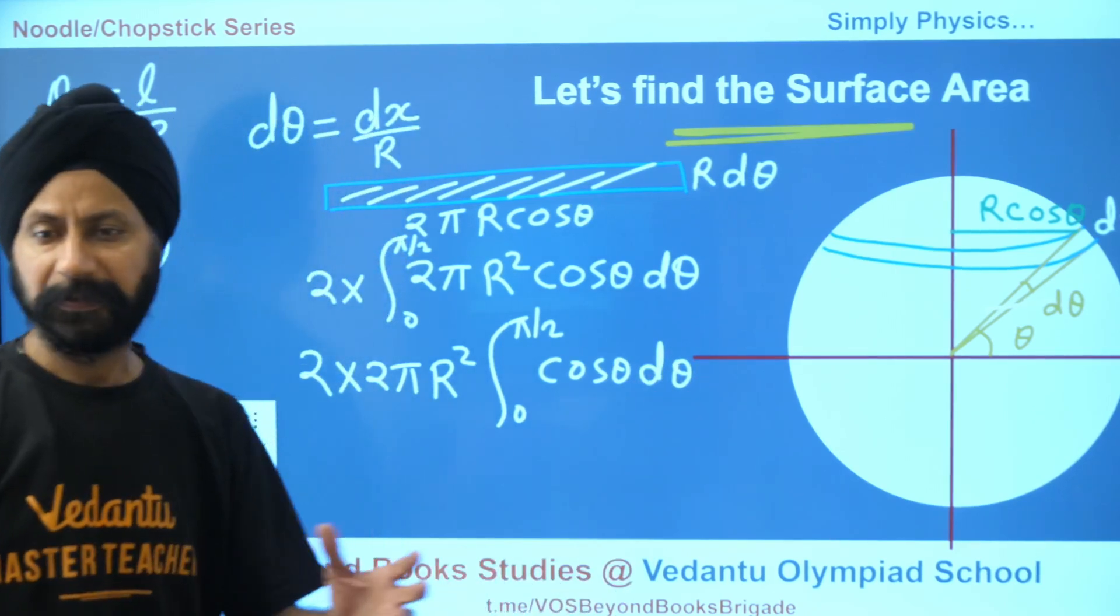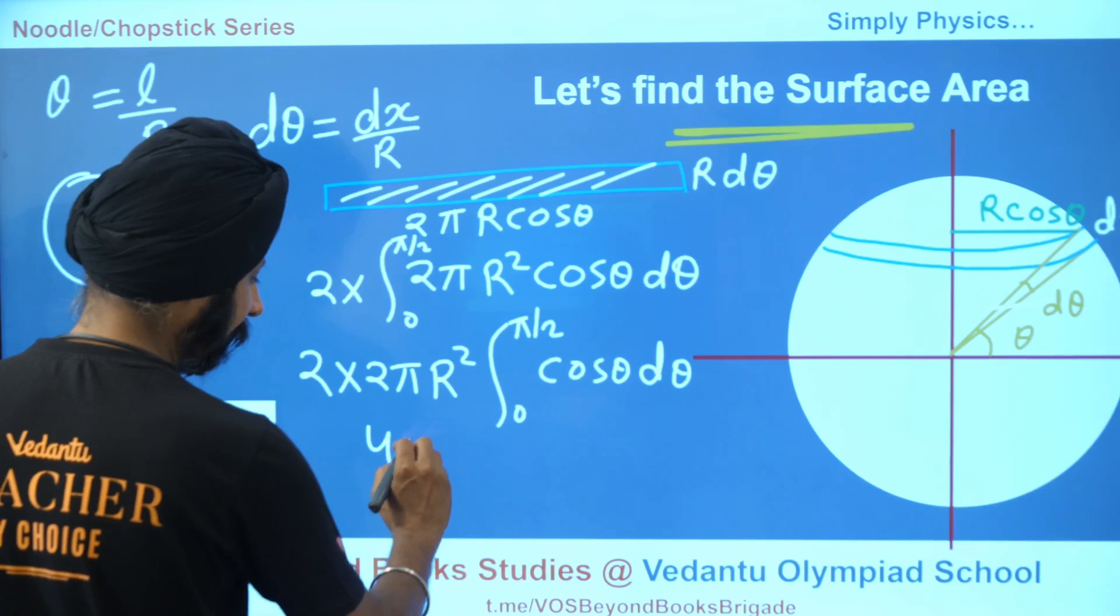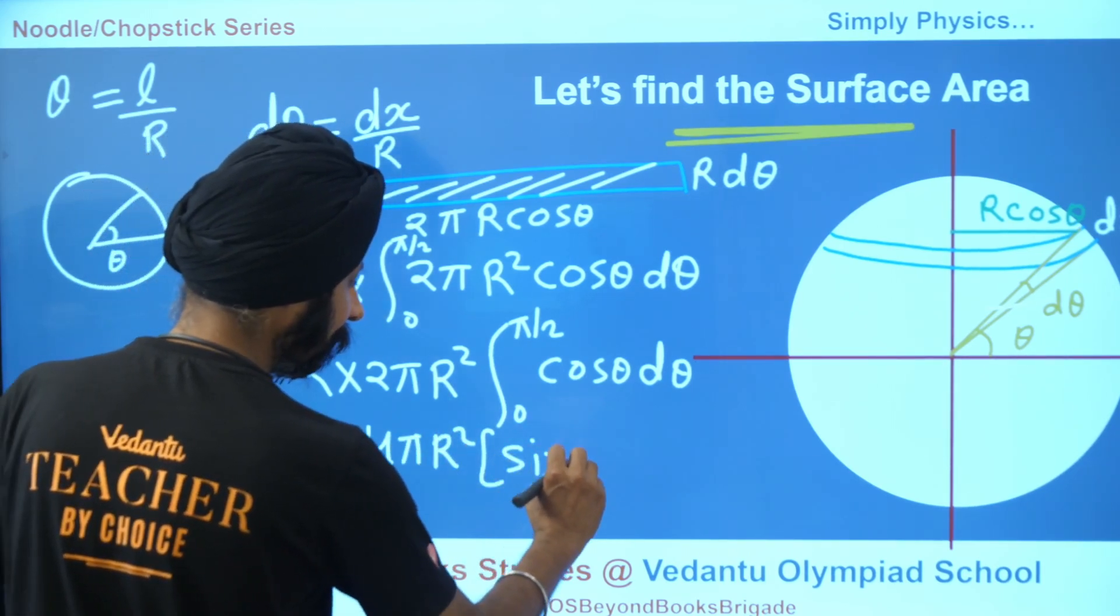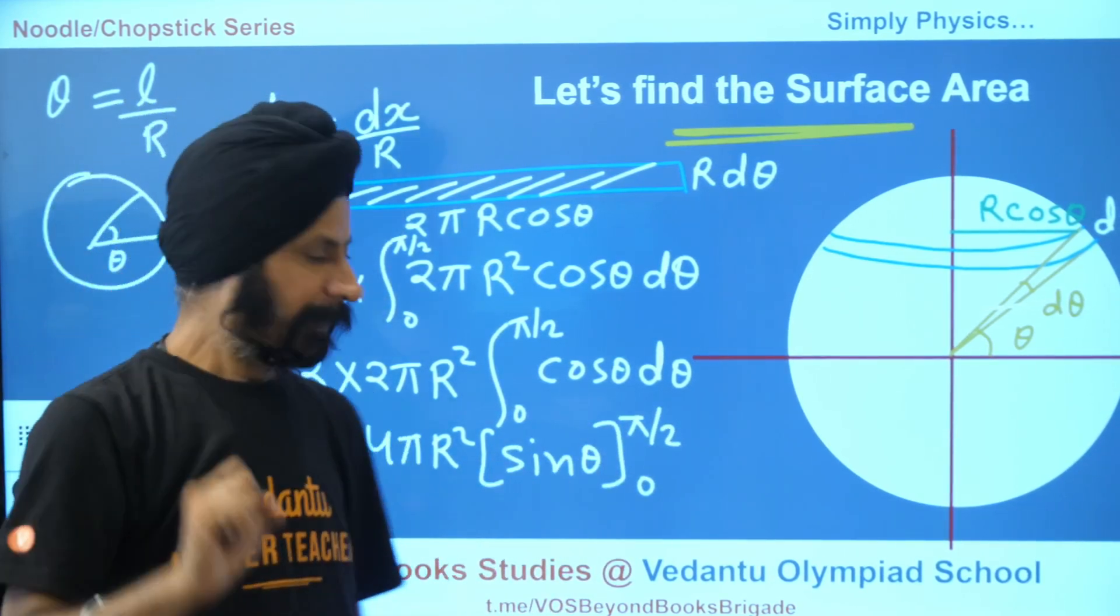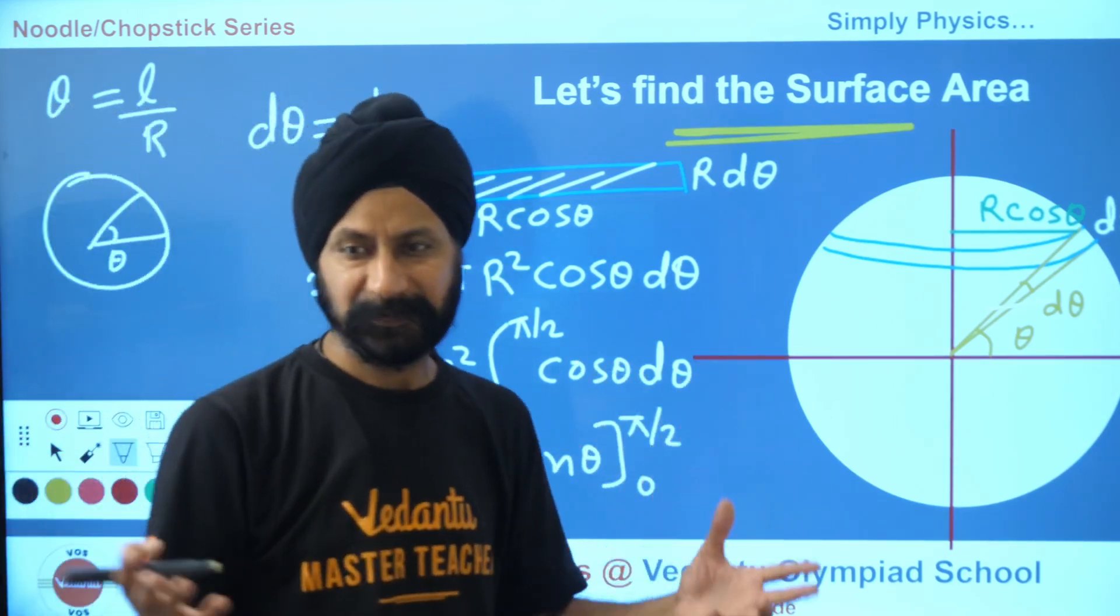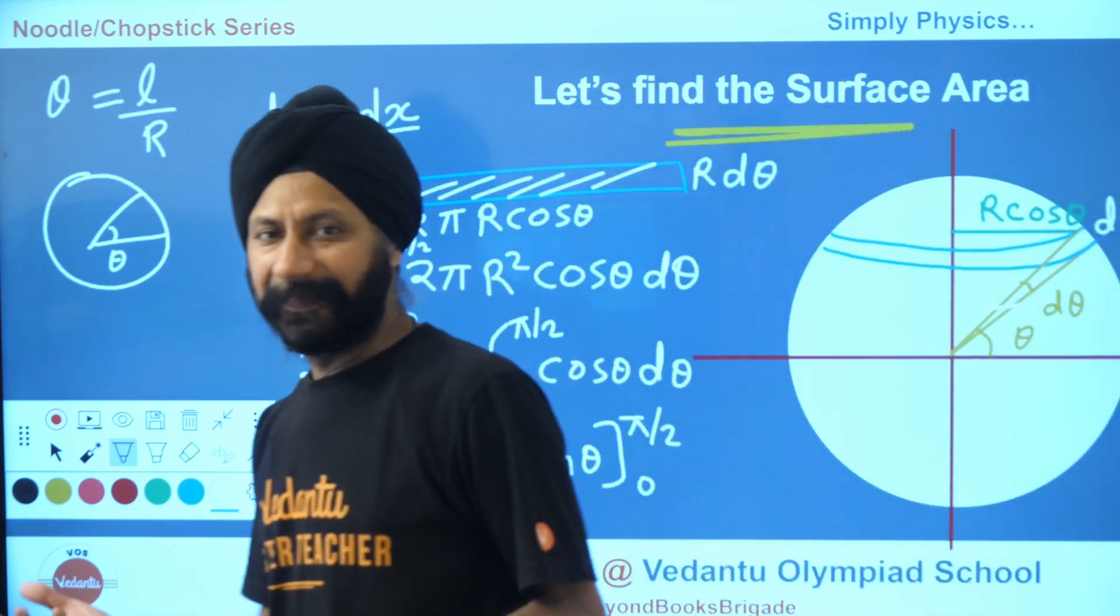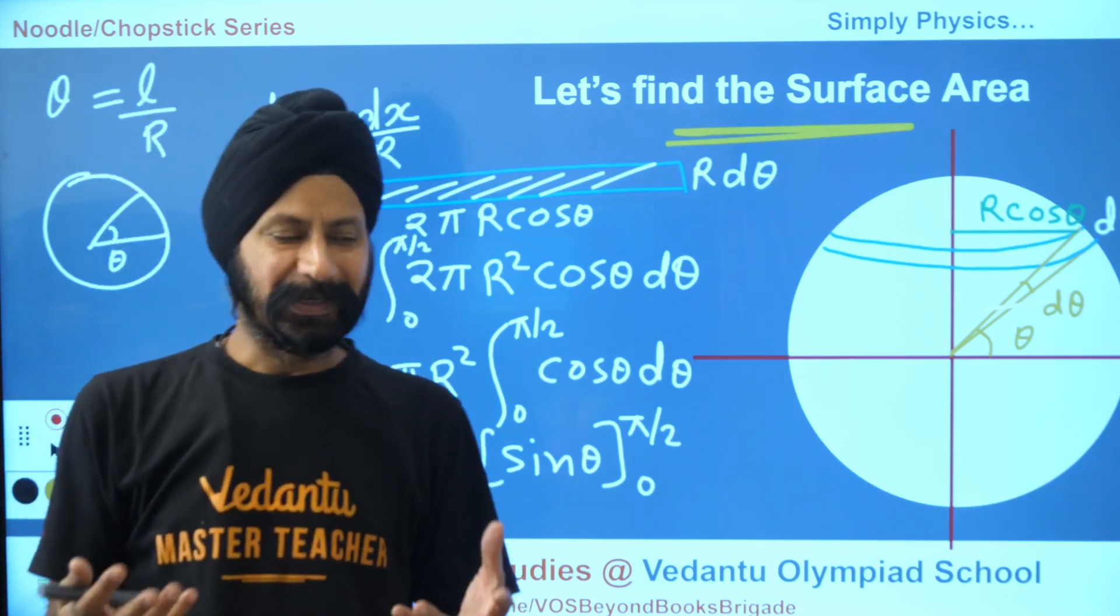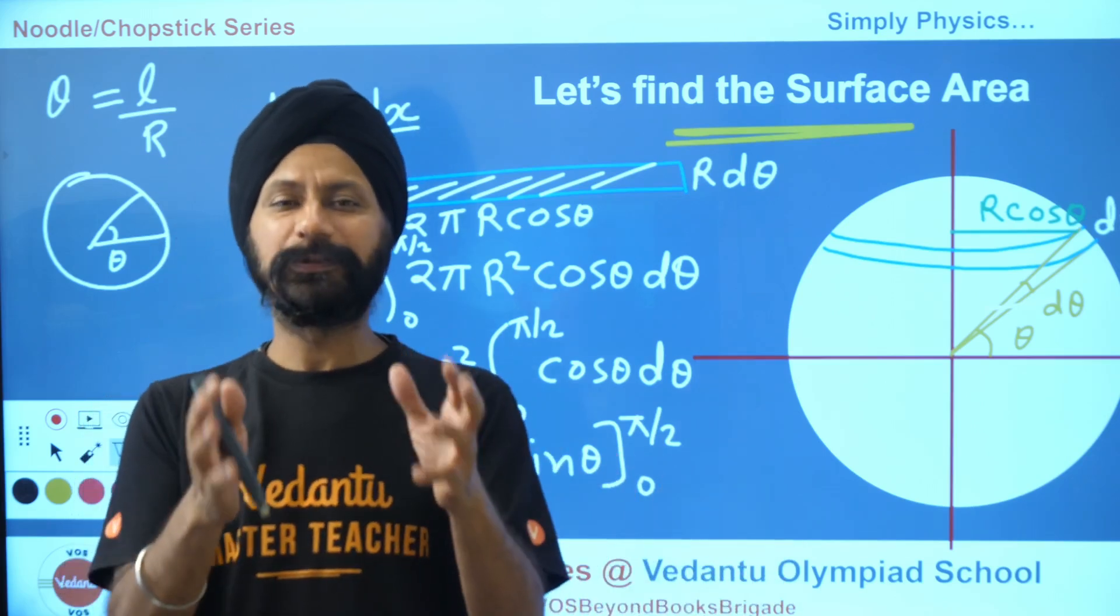And then integration from 0 to π/2 of cos θ with respect to θ. Now if you've done a little calculus course, integration of cos θ is sin θ. So 4πR² and then you get sin θ from 0 to π/2. Now sine of π/2 is 1, sine of 0 is 0. There you have it. So this is 1 minus 0, which is 1. So you've got 4πR². Look at the number of lines here - 3 or 4 lines. That's how you should always use calculus for any of your curiosity. I always say calculus is the language of physics. It's not just math, it's actually more specifically calculus.